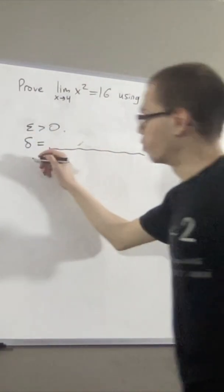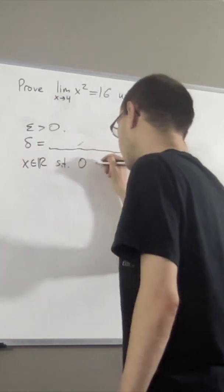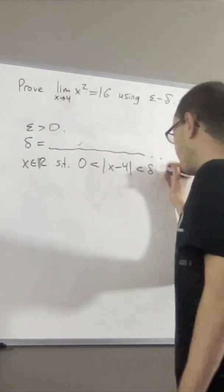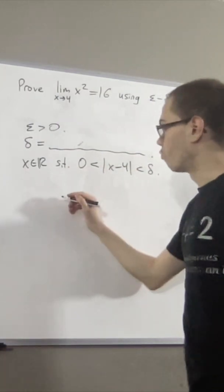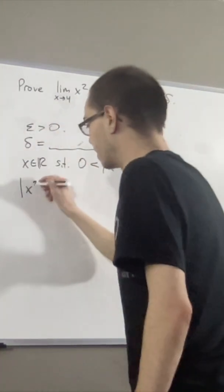Now, we give ourselves an arbitrary real number x such that 0 is less than the absolute value of x minus 4, which is less than delta, and from here we want to show that the absolute value of x squared minus 16 is less than epsilon.